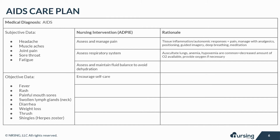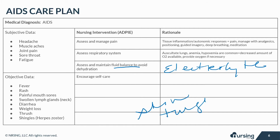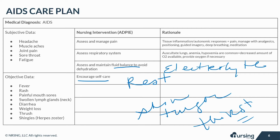Assess and maintain the patient's fluid balance to avoid dehydration and electrolyte imbalances. Be sure to assess skin turgor, mucous membranes, and thirst. Severe vomiting, diarrhea, fever, and sweating can all contribute to fluid loss. Fatigue is a common problem with AIDS patients, so encourage patients to provide as much self-care as possible to promote independence. Allow for rest periods to conserve energy for important functions like eating.